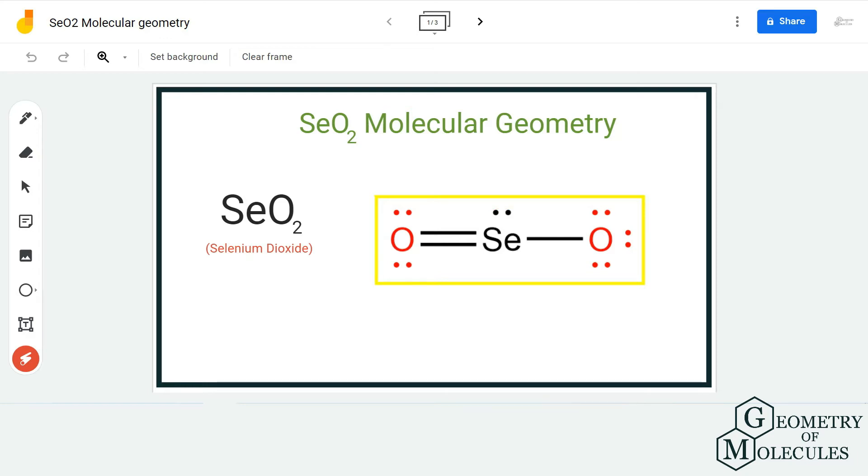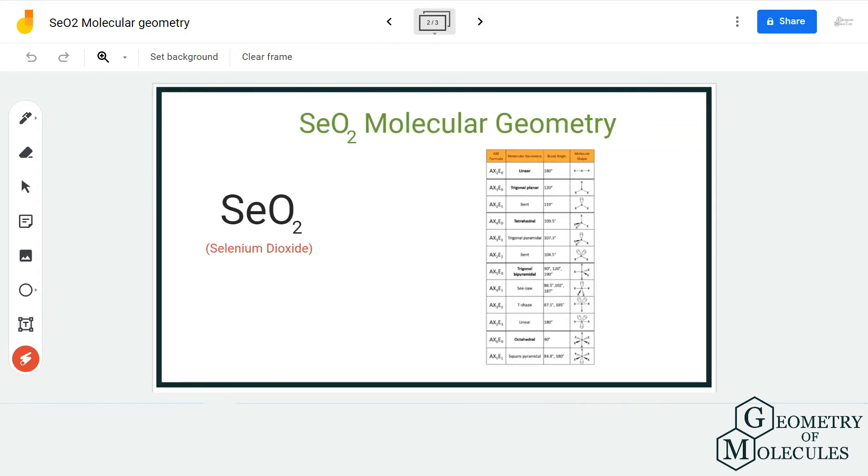To determine its molecular geometry, we are going to use the AXN notation method. The AXN notation method helps us determine the geometry of the molecule depending upon the number of atoms bonding with the central atom and the number of lone pairs on the central atom.